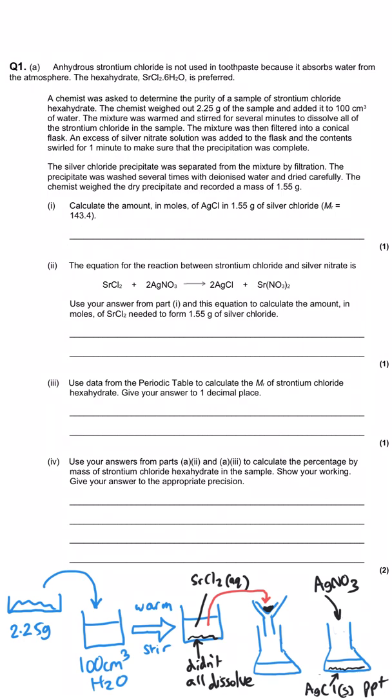The silver chloride precipitate that formed was then separated from that mixture by filtration then it was washed several times and it was weighed and found to have a mass when dried of 1.55 grams of silver chloride. The first question asks us to calculate the amount in moles of silver chloride in that precipitate and so we just have to do mass over Mr. They've given us the Mr and we have to then get a value of 1.08 times 10 to the minus 2.